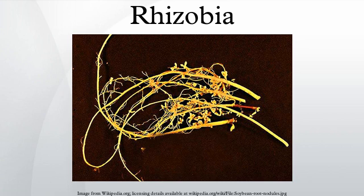Leghemoglobins, plant proteins similar to human hemoglobins, help to provide oxygen for respiration while keeping the free oxygen concentration low enough so as not to inhibit nitrogenase activity. Recently, a Bradyrhizobium strain was discovered to form nodules in Aeschynomene without producing nod factors, suggesting the existence of alternative communication signals other than nod factors.